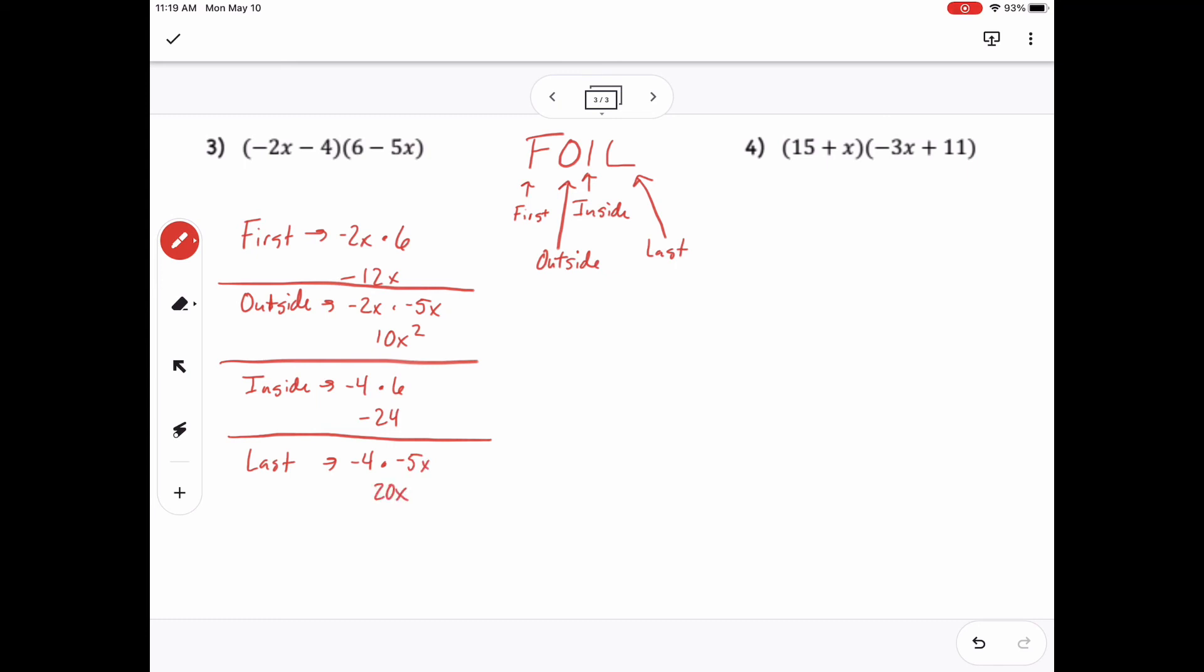And so then now I can write them together as an expression and put like terms together. So negative 12x and 20x go together. And then I can write this in standard form: 10x squared first, then plus 8x minus 24. That's my answer.